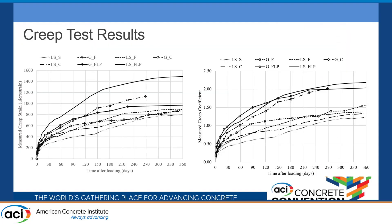Here are the results from the eight mixtures — I list only seven, since one had a problem with the loading frame and was excluded. That was the one with gravel and slag. In the graph on the left you see the creep strain, and on the right the creep coefficients. It ranges from about 1.3 to almost 2.2. The highest creep coefficient occurred with the mixtures containing limestone powder, which also had the lowest compressive strength and resulted in the highest creep strain. All others were basically in the same range.